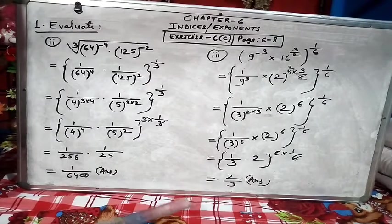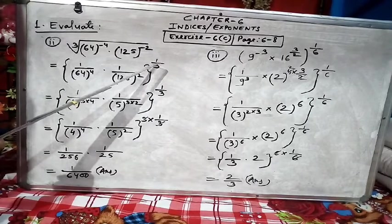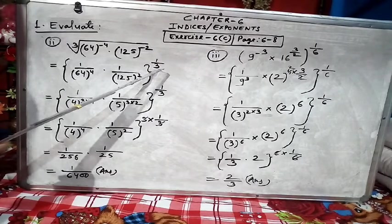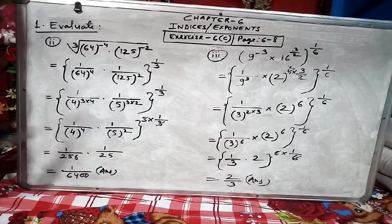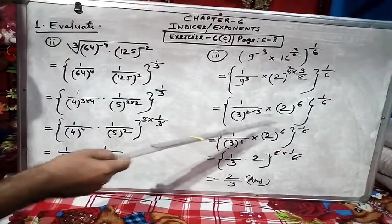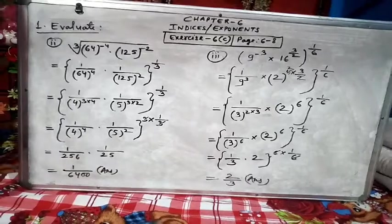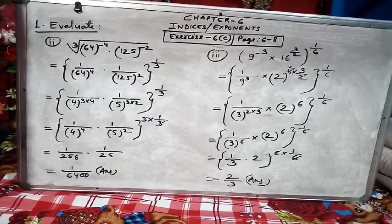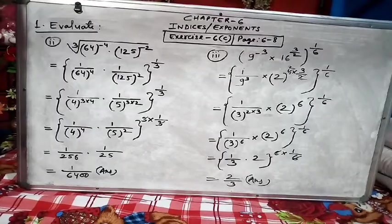Overall, what we do in this chapter is look at whatever power is outside and what is the denominator of the power. If there is 3, we try to bring 3 from the internal part. If there is 6 in the denominator, we try to bring out 6 from the internal part. That way, the question becomes very easy. Look at these two examples and do the homework I have given. Thank you, children.